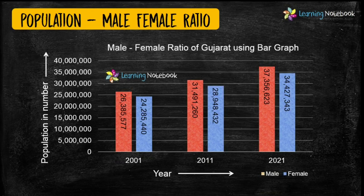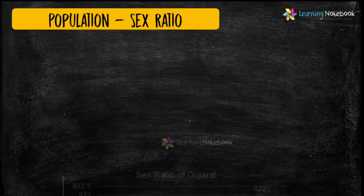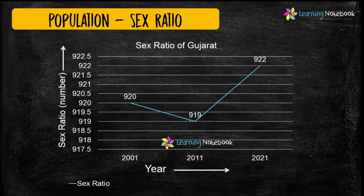Double bar graphs can be used to show male and female ratio of Gujarat population. In the same way, you can use a line chart to show the sex ratio of the population of Gujarat.